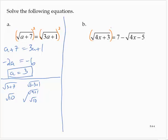So I'd have the square root of 4x plus 3 squared, but then I have to square the entire right-hand side. So remember, that means I have 7 minus the square root of 4x minus 5 times 7 minus the square root of 4x minus 5.